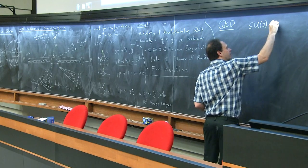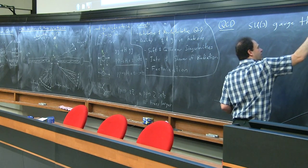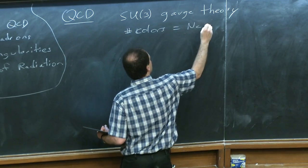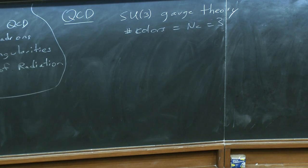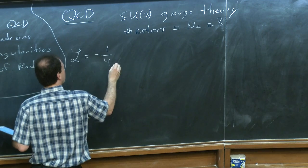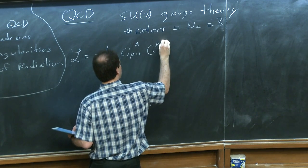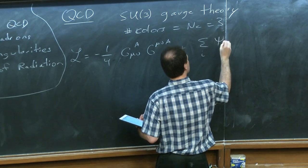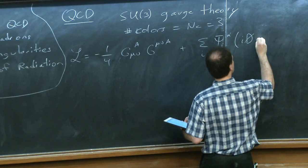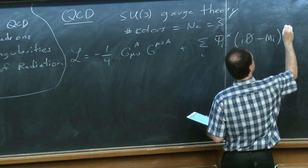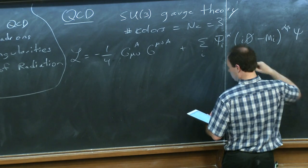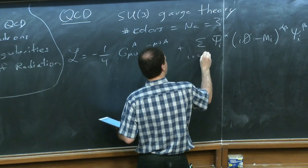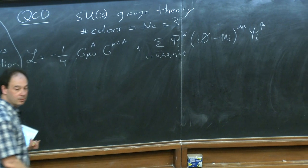Let's start with a review of QCD. QCD is an SU(3) gauge theory — it's part of the standard model. The number of colors N_C is 3. As a gauge theory, it has a coupling to the field strength tensor for the gluons, as well as coupling with the quarks. The indices alpha and beta are color indices, A is also a color index, and I is a flavor index. We sum over I = up, down, strange, charm, bottom, top — all quarks couple universally to the gluons. There's a covariant derivative and a gauge-fixing term.